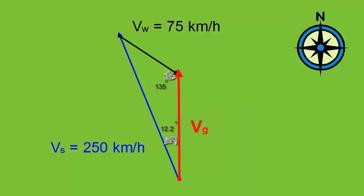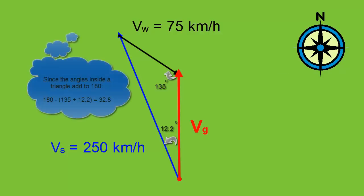The next step is figuring out the last of the angles inside the triangle, knowing that they add up to 180 degrees. And you can see that we get 32.8 degrees for that angle.